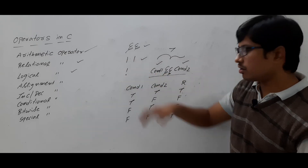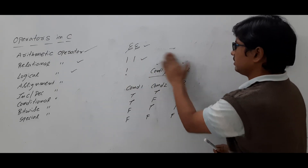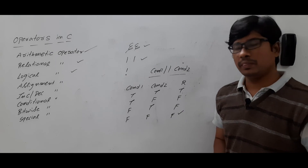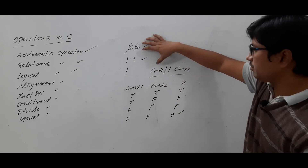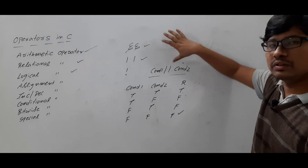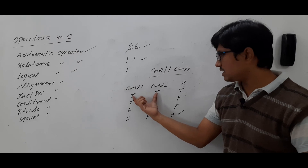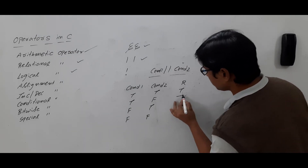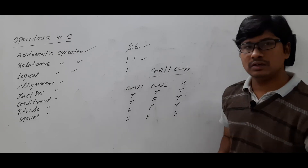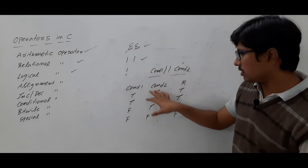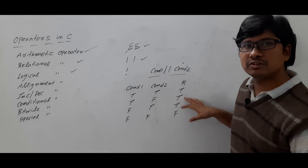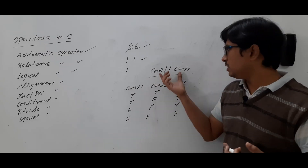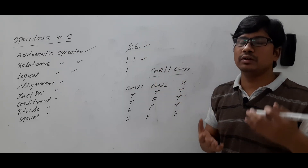Now let me discuss about the logical OR operator. With logical OR, if any one of the conditions is true, then the final result will be true. If both conditions are true, then it is true. If any one of the conditions is true, the final result will be true. Only if both are false, the result is false. You will usually see them in if conditions when you want to check more than one condition.